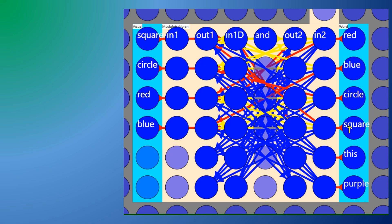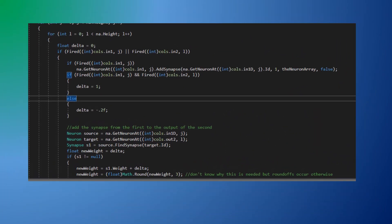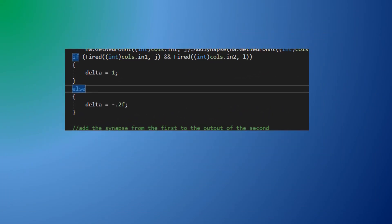What is the algorithm? For each concurrent firing the synaptic weight between the input and its associated output is increased and for each non-concurrent firing the weight is fractionally decreased. The negative delta of 0.2 was chosen experimentally.